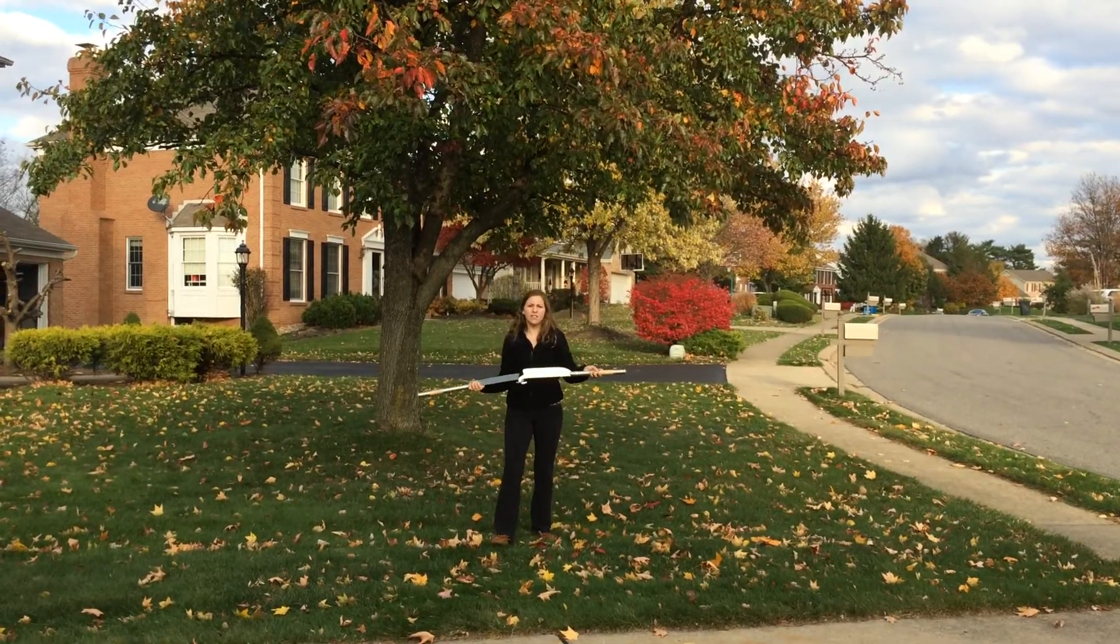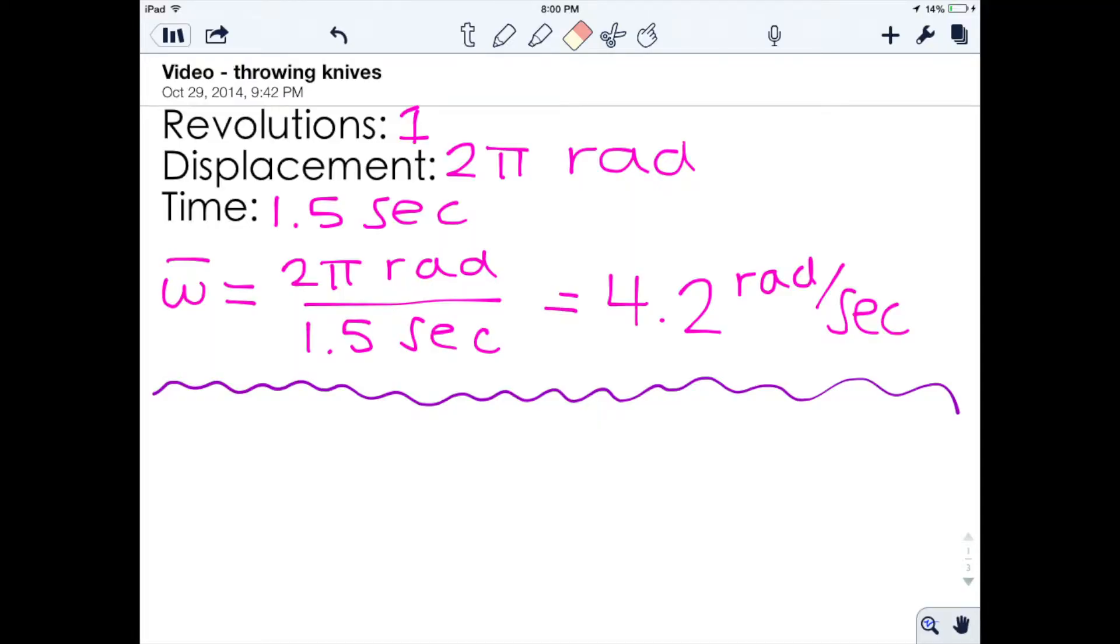Next, we're going to take a look at the video of me throwing the knives. The knives make a total of one revolution in 1.5 seconds. Moving on to the next slide, we can see that the displacement is 2π radians, and calculating for the average velocity using the same method as before, we're going to find that to be 4.2 radians per second.